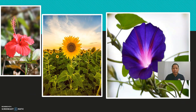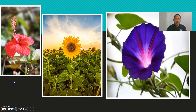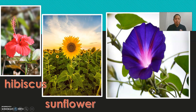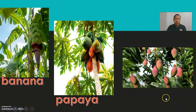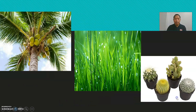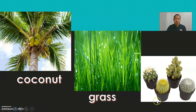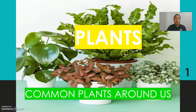Now let's review again. What is this? Hibiscus. A sunflower. A morning glory. A banana. Papaya. Mango. Coconut. Grass. And cactus. These are all common plants around us.